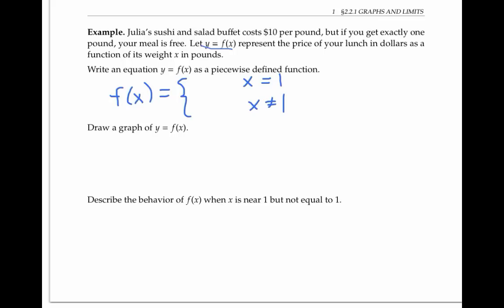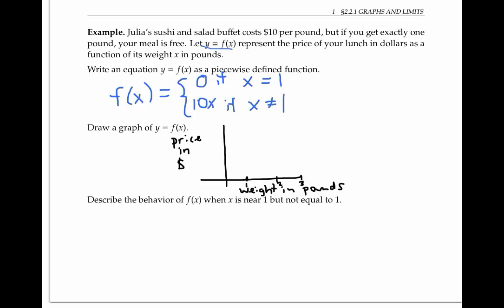If the weight is exactly one pound, then f of x, the price, is zero. But if x is different from one pound, then the price is 10 times x. As a graph, my function is going to follow the line y equals 10x. But when x is exactly one, my function is going to have a value of zero, and not 10. The open circle here represents a hole, or a place where a point is missing on the graph.